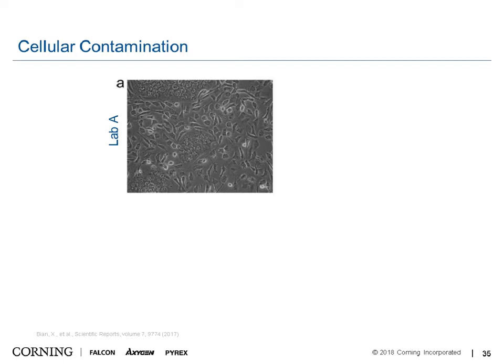How does cellular contamination look? Here is an image of a cell type in culture. With time and experience you start to recognize your cells — you know how they should look and how fast they grow. If you look closely, you can probably see a few cells in the middle with a more round structure, while the others around them are more spindly in shape.